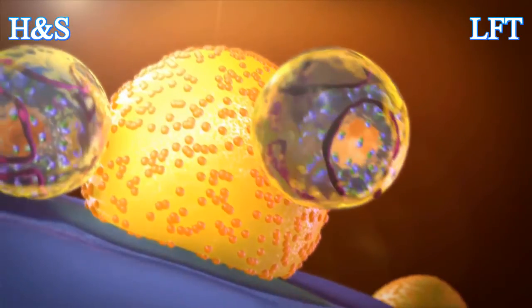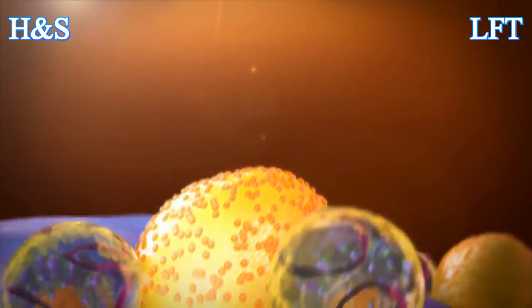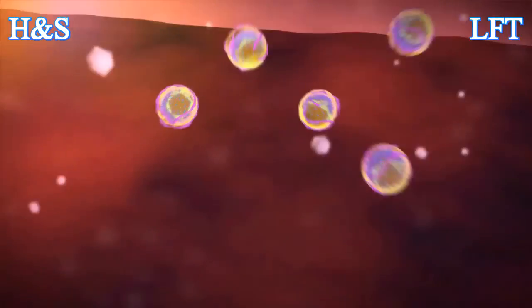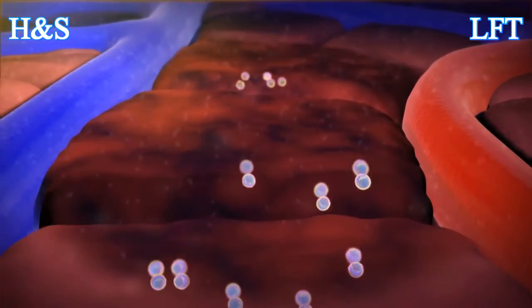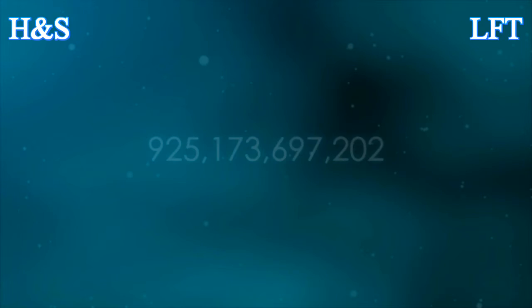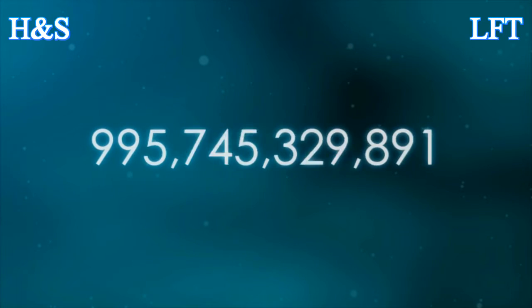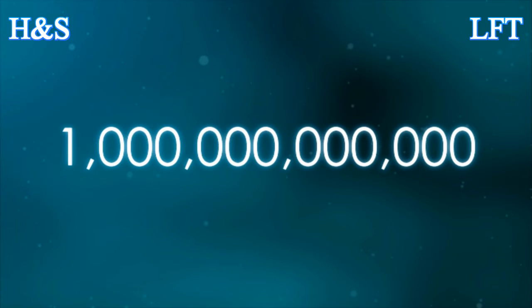These viral RNAs are packaged into new viral particles and transported out of the cell to infect neighboring liver cells. This constant proliferation of HCV copies continues at an estimated daily rate of one trillion copies.